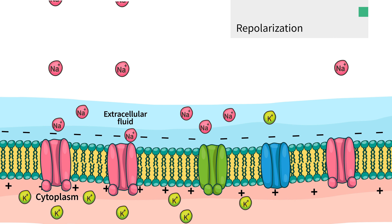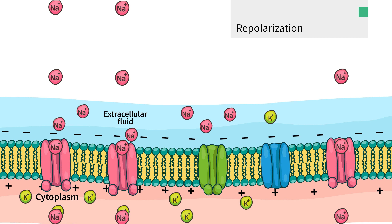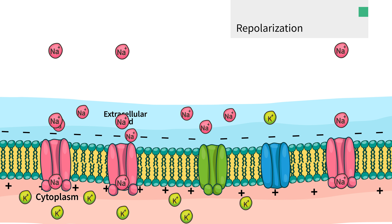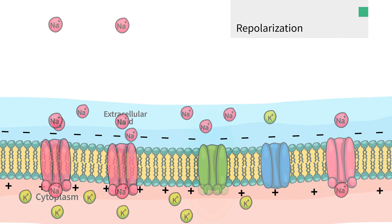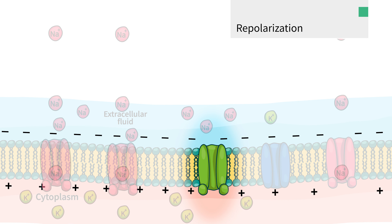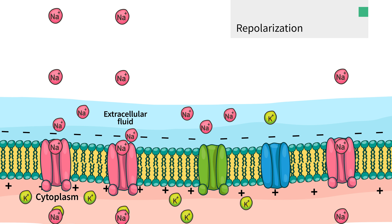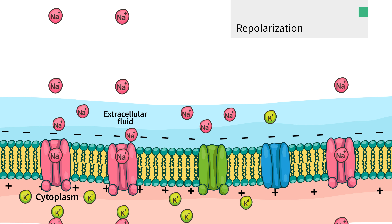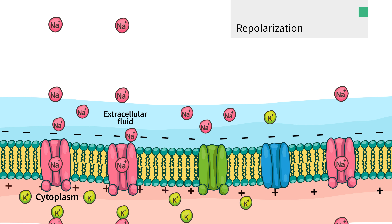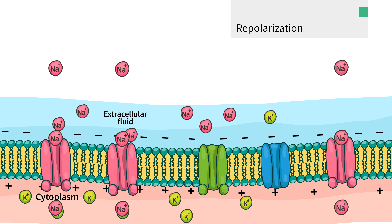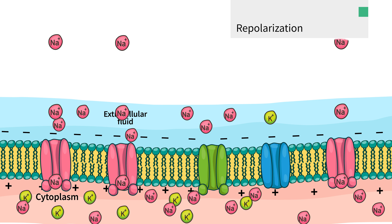Repolarizing the neuron turns out to be pretty straightforward. Voltage-gated potassium channels open much more slowly than sodium channels. By the time potassium channels open, the membrane potential is already quite positive due to the recent massive influx of sodium.